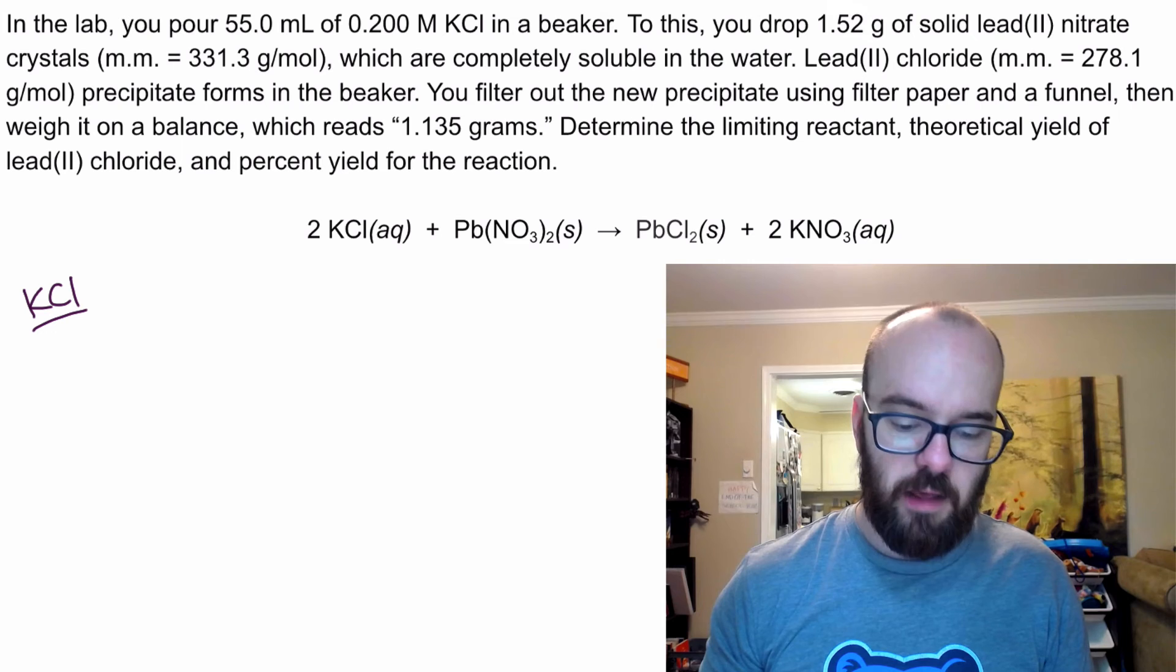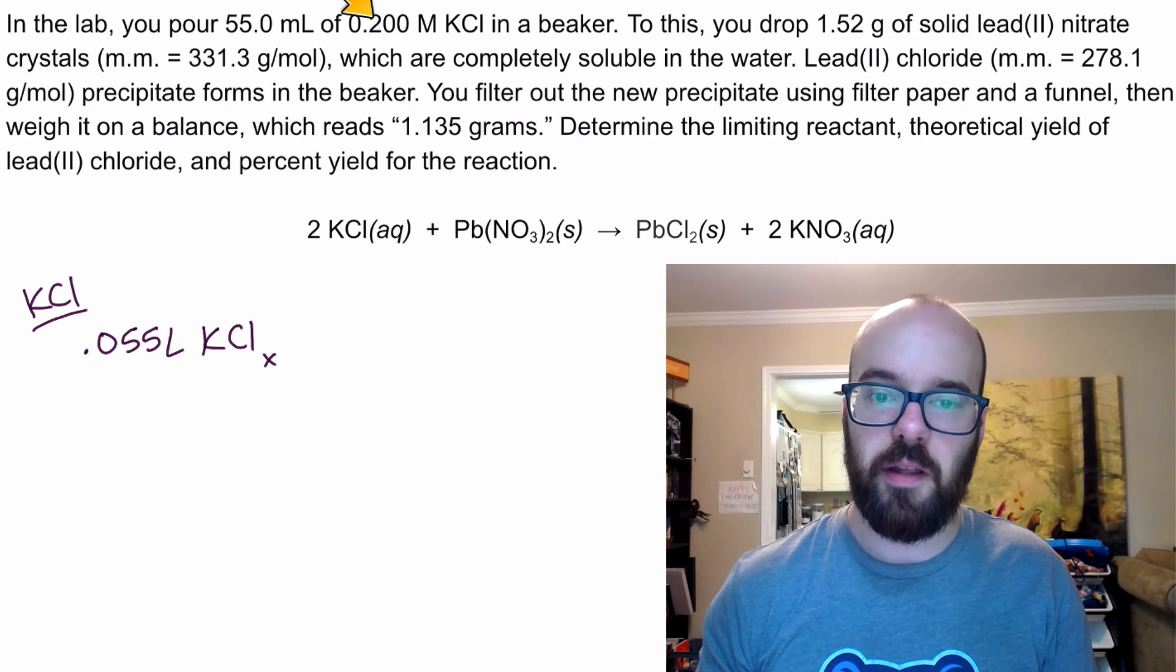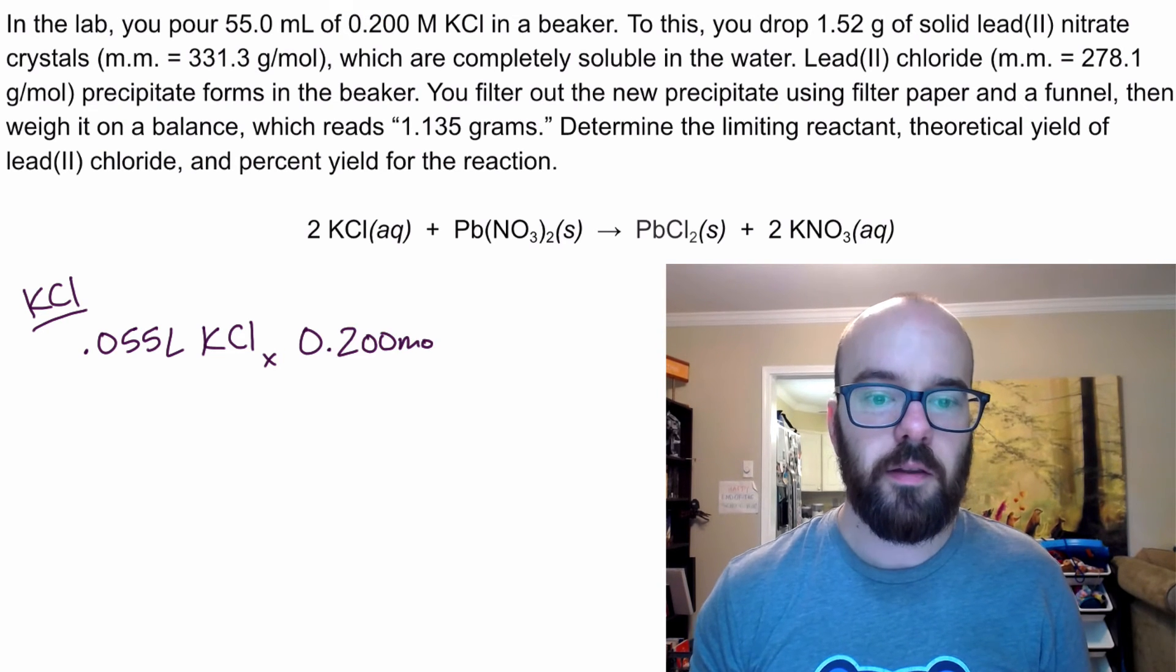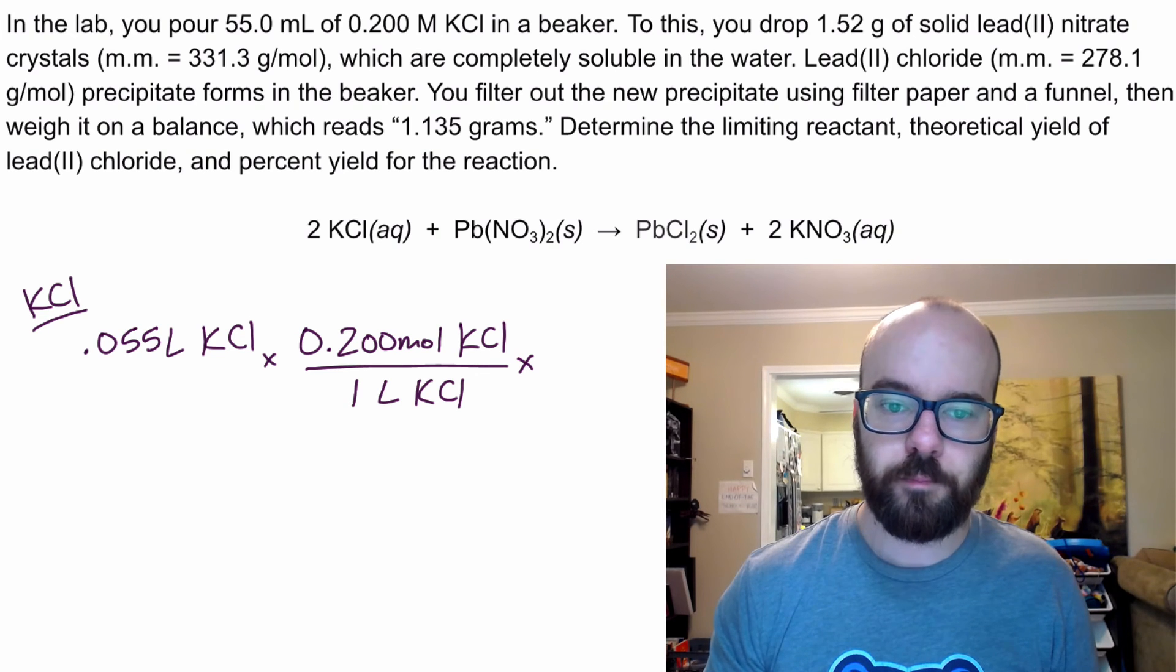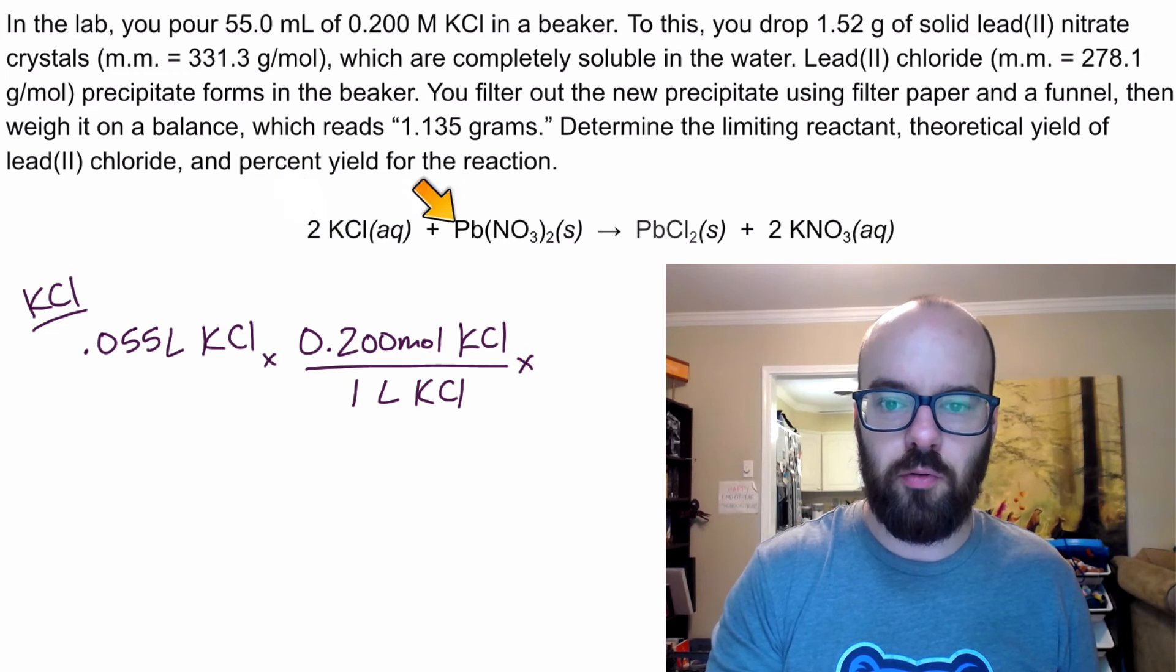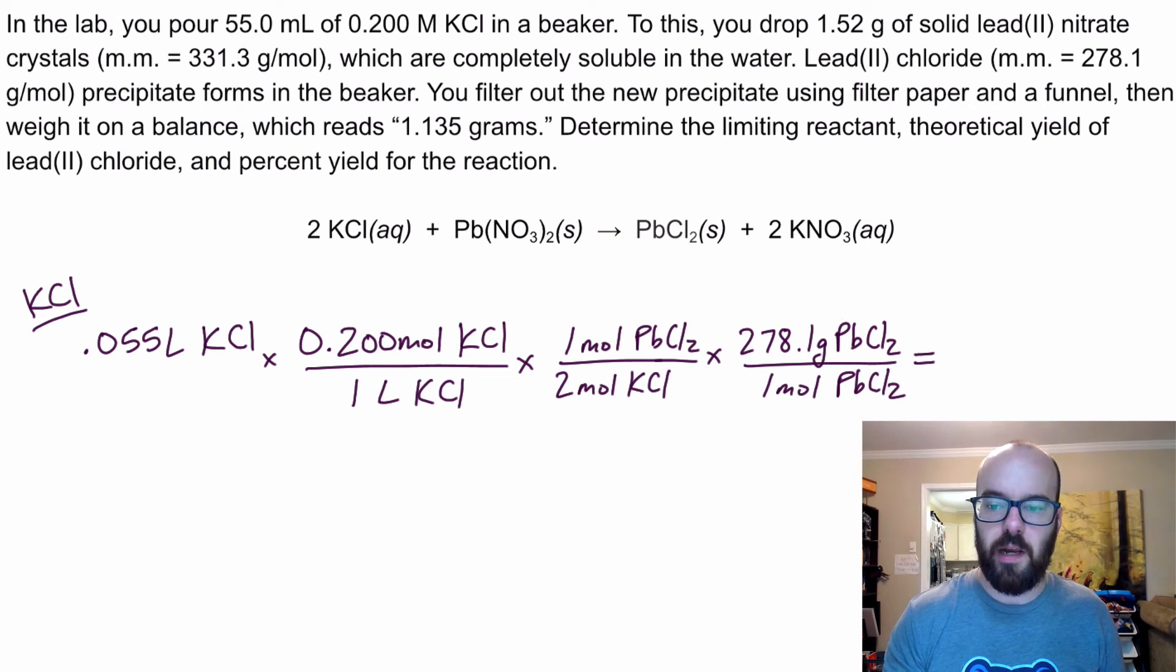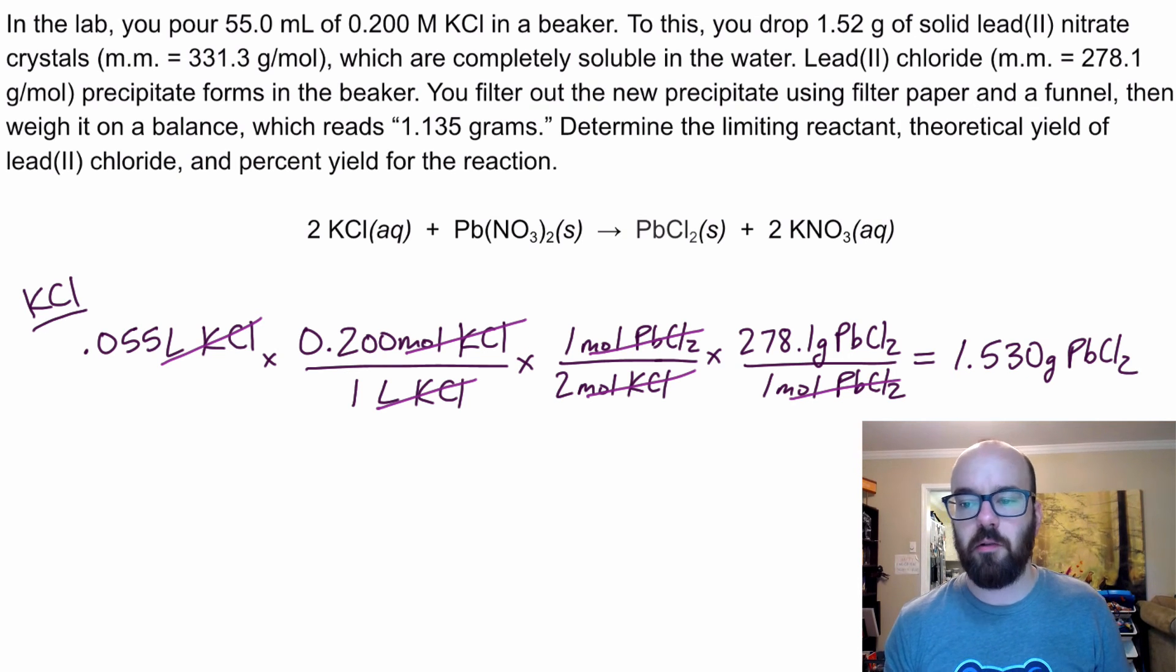We're going to treat this just like the last problem. We know it's a limiting reactant problem because we have two reactants and amounts of each. So I'm going to start with KCl first. In the problem, it says we've got 55 milliliters. I'll write 0.055 liters. And we're going to use that molarity as a conversion factor for moles to liters. So I'll set that up. 0.2 moles of KCl per one liter. And then we're going to use moles to moles conversion. It's two to one. So two moles of potassium chloride for one mole of lead chloride. And then we'll use our molar mass of lead chloride, 278.1 grams per mole. And we're left with 1.530 grams of lead chloride.